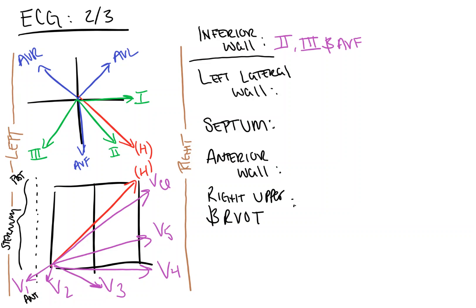And so, as you can see on our first X and Y axis, leads 2, 3, and AVF, that I'm circling down here in purple, all point inferiorly. Therefore, inferior wall MIs will manifest themselves in a normal heart and a normal EKG in leads 2, 3, and AVF. I'm just going to extend this line in here a little bit.